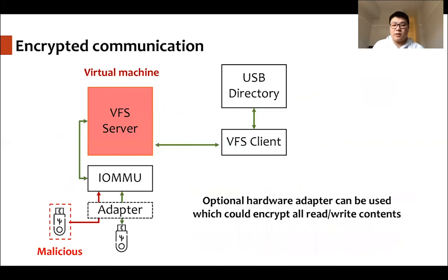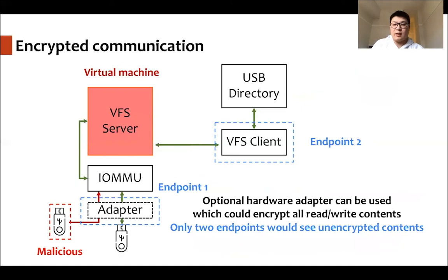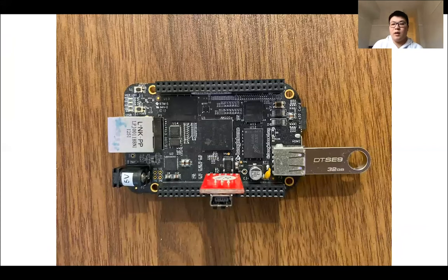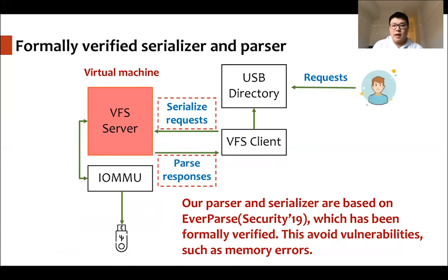For the case where a malicious flash drive tries to steal content from the honest flash drive, we can add an optional hardware adapter to encrypt all read and write content. After the honest flash drive is connected to the adapter, it runs a process similar to TLS. Only the two endpoints — the adapter and the VFS client — can see the decrypted content of the honest flash drive, so the malicious flash drive has no way to steal the data. We build our adapter on top of the Beaglebone Black board. For the parser and serializer, we base them on EverParse, and the parser and serializer code is automatically generated and formally verified, avoiding vulnerabilities such as memory errors.